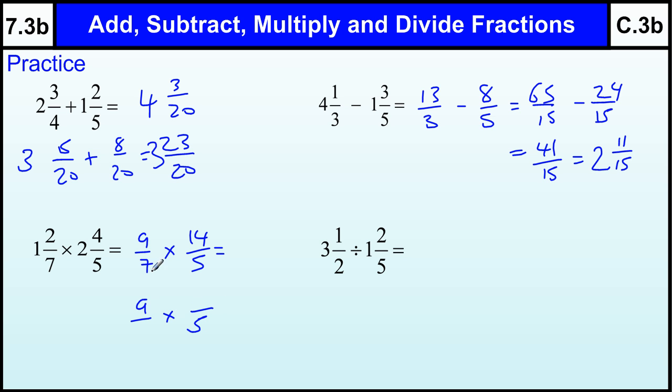7 and 14. 7 goes into 7 once, 7 goes into 14 twice. So this is just the same as 1 times 2 over 1 times 5, which is 18 over 5. Whereas if you did it this way, you get 126 over 35, then you'd have to figure out what goes into both of those and cancel that down. Whereas here you should know that 7 goes into both because it cancelled out earlier. So you'd end up with 18 over 5, which is 3 and 3 fifths.